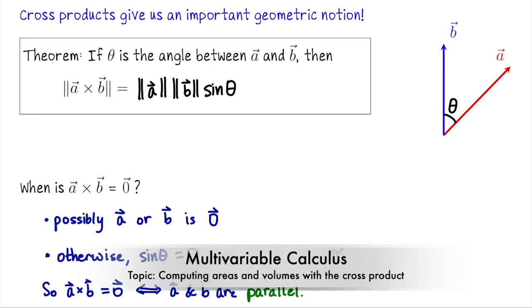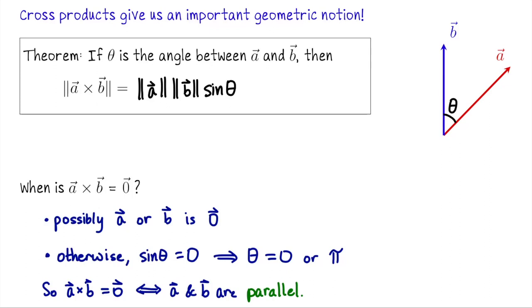In this lecture we're going to continue talking about the cross product, and in particular we're going to use the cross product to compute areas and volumes. To do that we need to remember this formula: if you take two vectors a and b in R3 and cross them, you get another vector whose length equals the length of a times the length of b times sine of the angle between them.